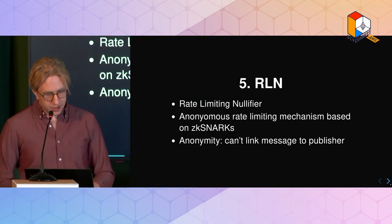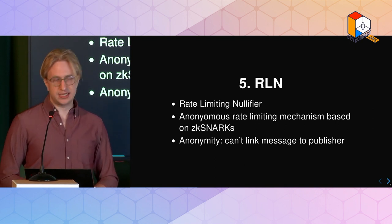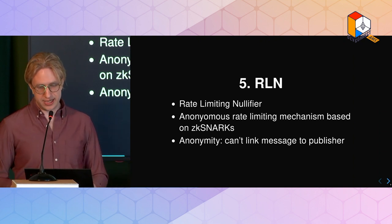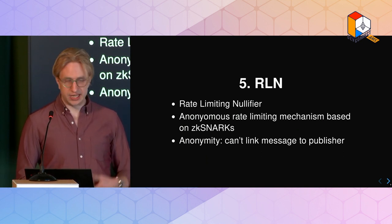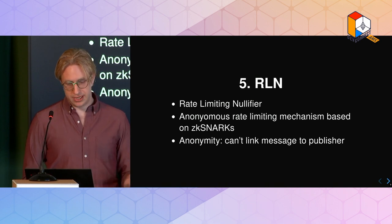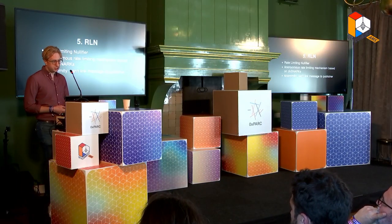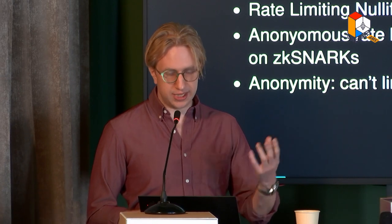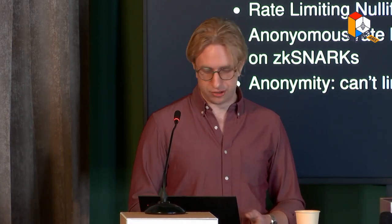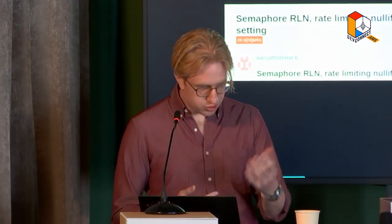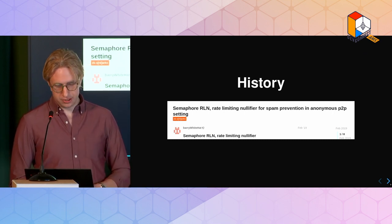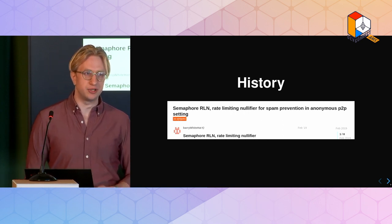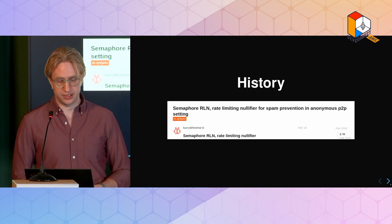So what is RLN? It stands for Rate Limiting Nullifier. Rate limiting means you can send N messages in a given period. This is an anonymous rate limiting mechanism based on ZK-SNARKs, and it can be used for spam protection in peer-to-peer messaging systems, but also for rate limiting in general - things like decentralized CAPTCHA. When we say anonymous, we mean the message can't be linked to the publisher. The history of RLN originally was a blog post by Barry on EF research a few years ago, and since then a lot of work has happened in terms of implementations, performance improvements, and the construction.